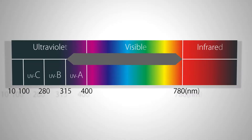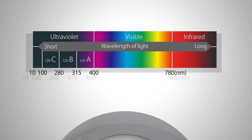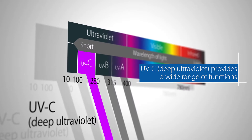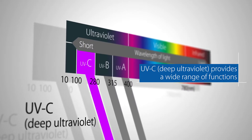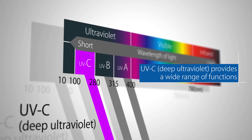Light is divided into infrared, visible, and ultraviolet depending on the wavelength. UV light has a wavelength of 10 to 400 nanometers and is not visible to the naked eye. Deep ultraviolet, or UV-C, spans from 100 to 280 nanometers and does not reach the Earth's surface. It provides a wide range of functions including disinfection, decomposition of organic matter, and sensing.